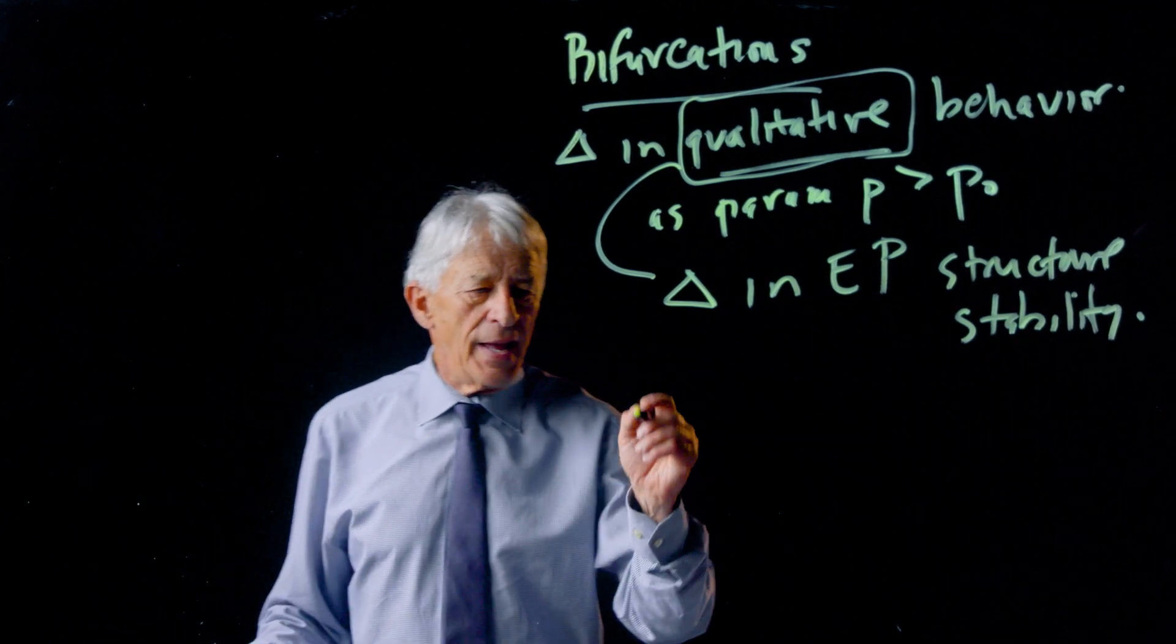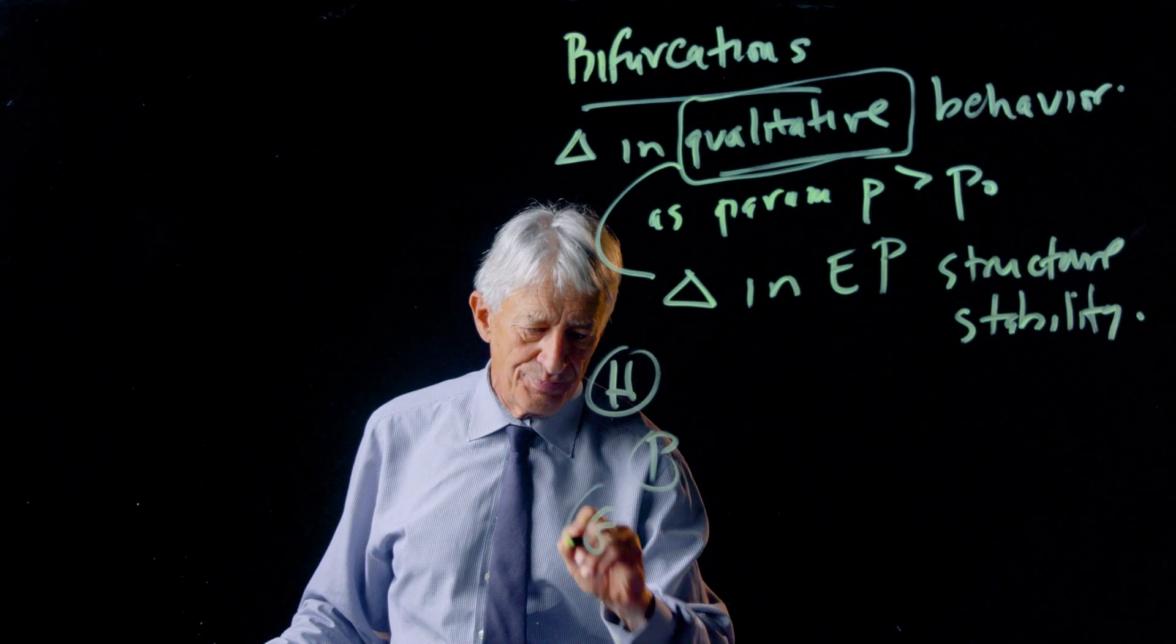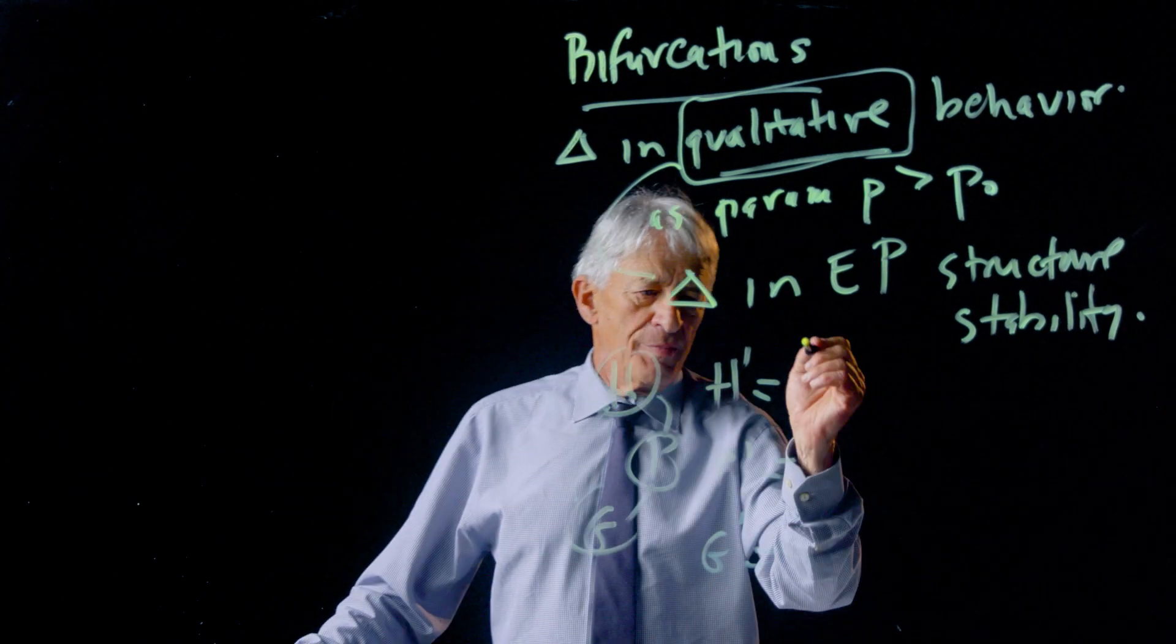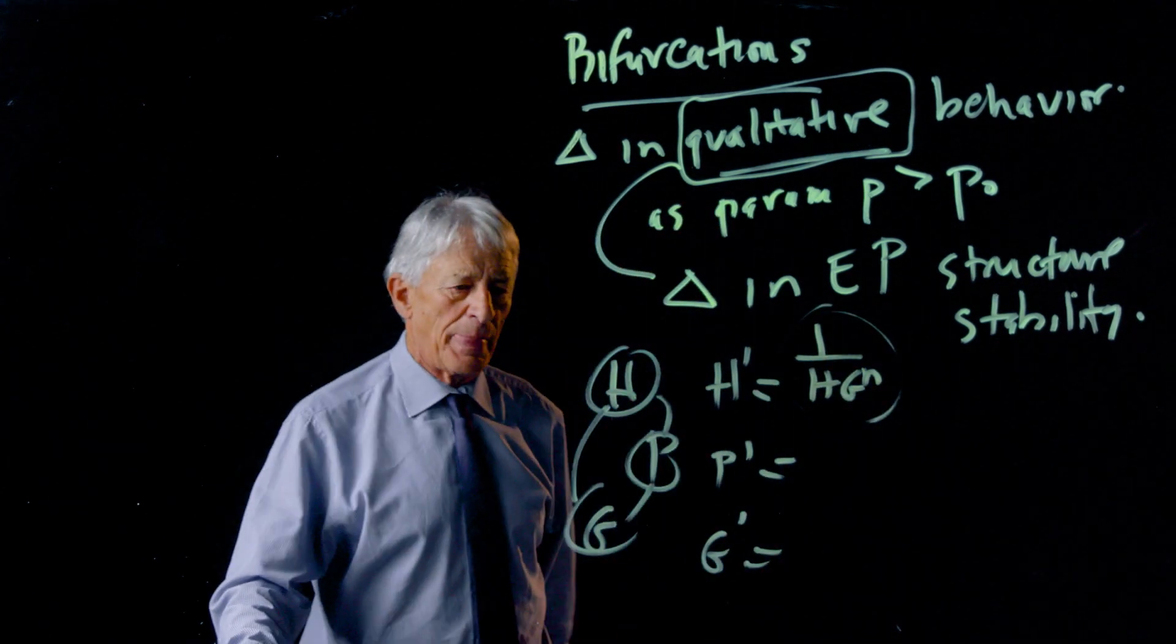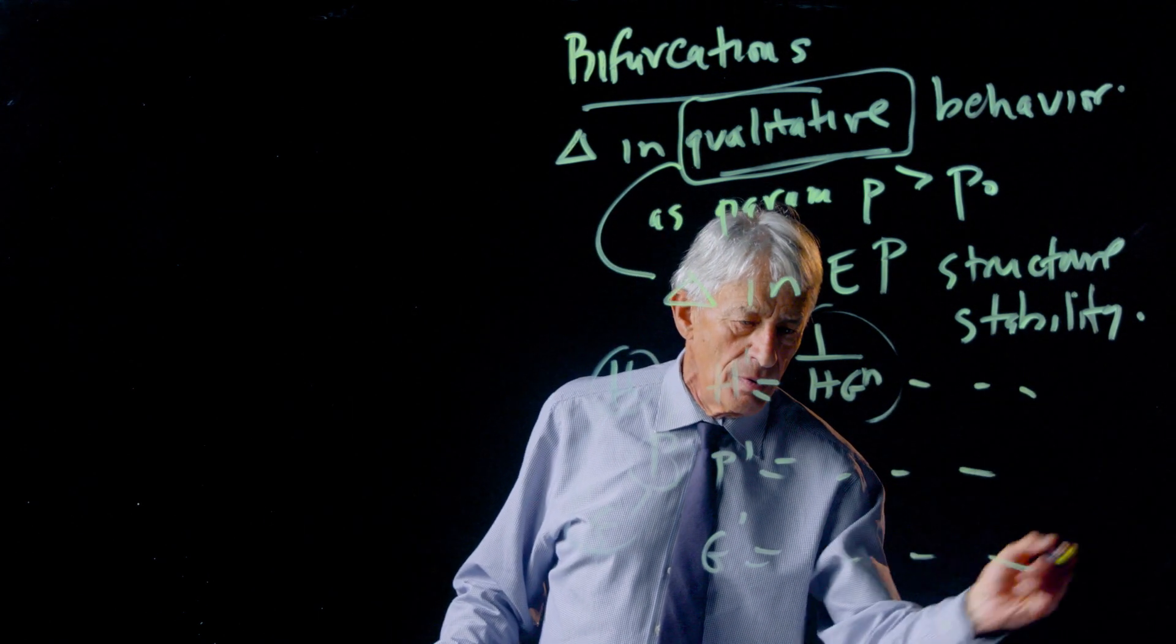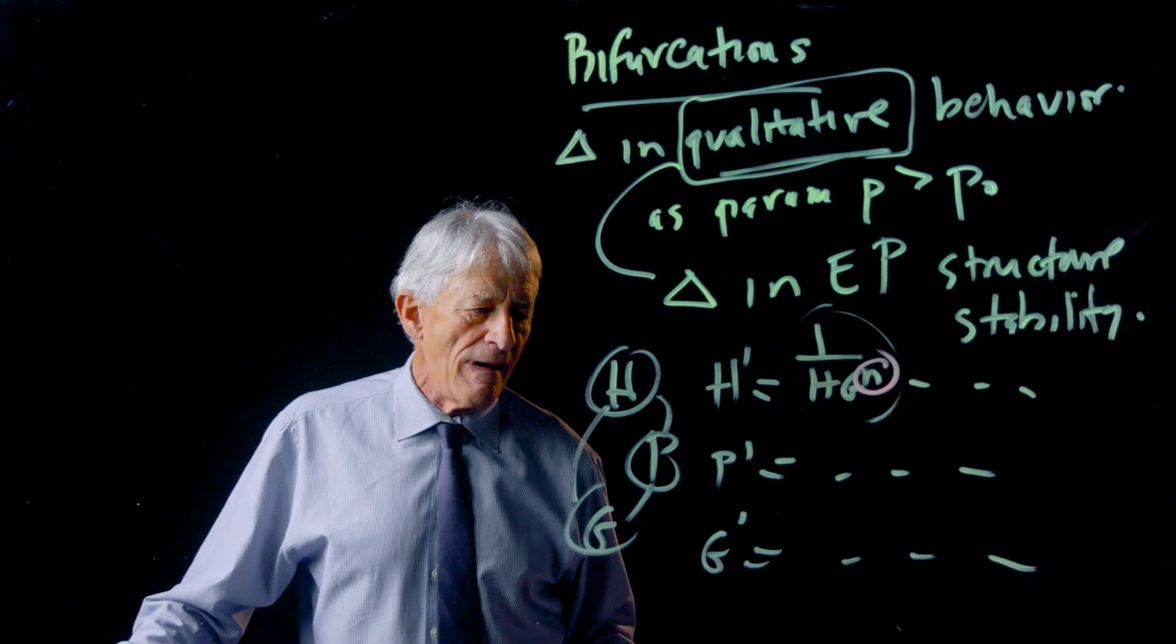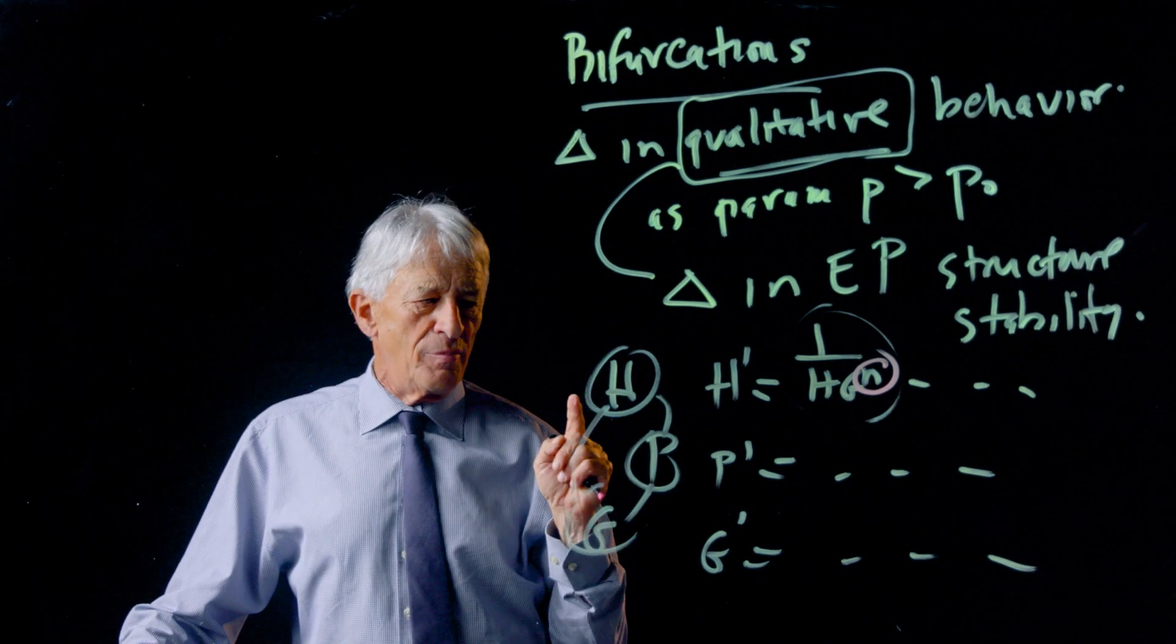Now let's look at what happened, for example, with the HPG system. And you remember H prime and P prime and G prime. And you remember the term 1 over 1 plus G to the N, which is the feedback. And you remember that that feedback term, in particular, the steepness of the feedback as measured by that N was a critical parameter in determining the behavior of the model.